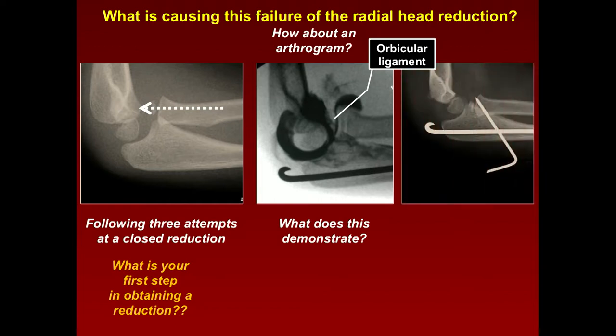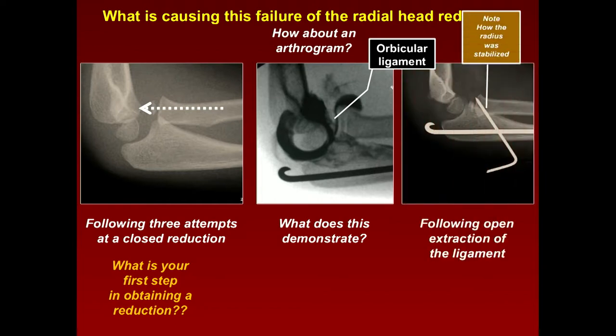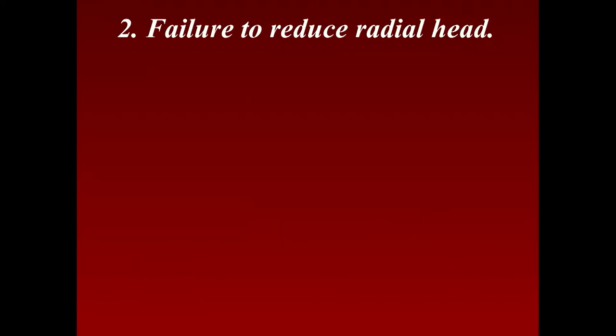So we went ahead and took that out — opened it up. Notice it seemed to be a little bit unstable, and notice how the radius was stabilized: not with a transcapitellar pin, but with an oblique pin, so that if it breaks, you can take it out.